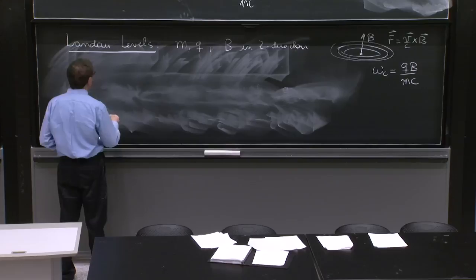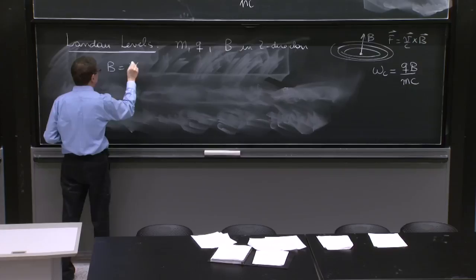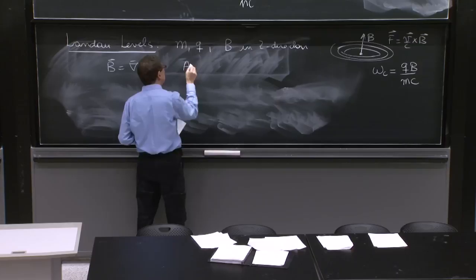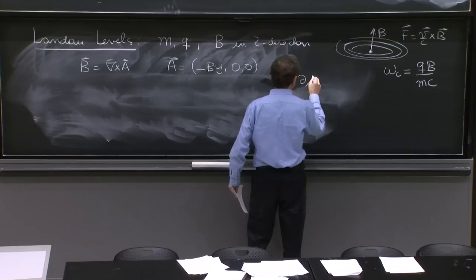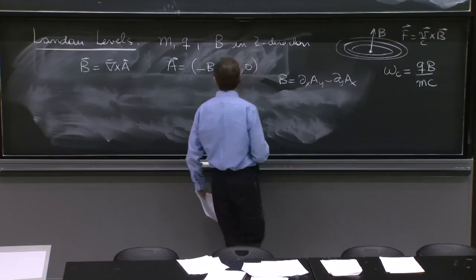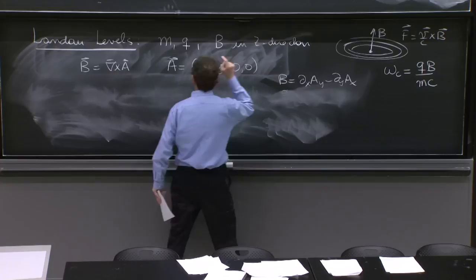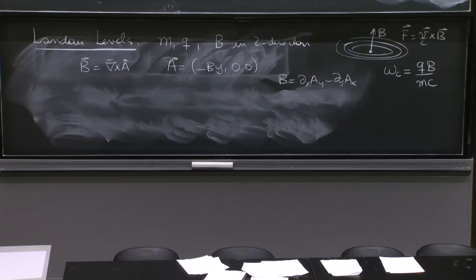So again, we're faced with having to represent the magnetic field. So you have the magnetic field, this curl of a. And we'll take a solution in which a, this time, is minus by, x, 0 and 0. Remember that b is dx ay minus dy ax. And therefore, this works out. This has an ax component. The derivative with respect to y gives you the magnetic field b.